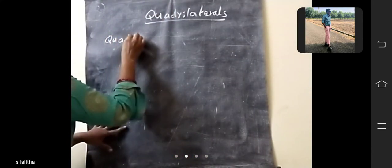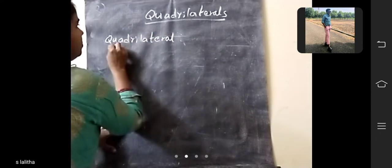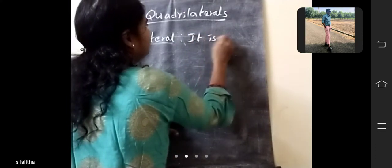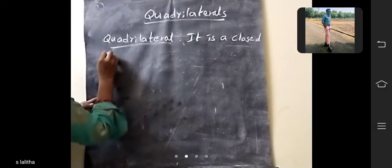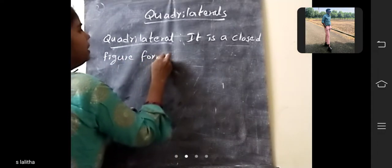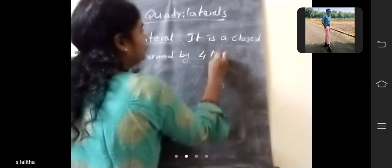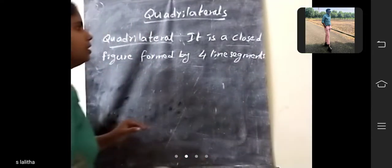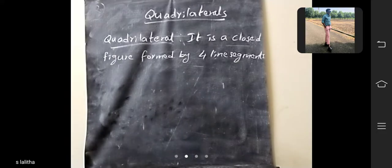So what is the definition of quadrilaterals? It is a closed figure formed by 4 line segments.